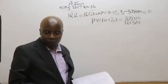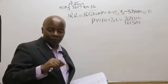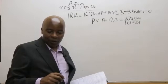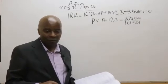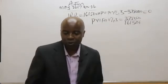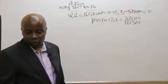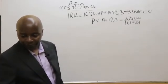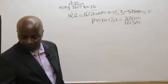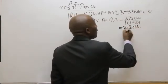Remember, our PVIFA tables are always written in four decimal places. So the result here is 2.3216.